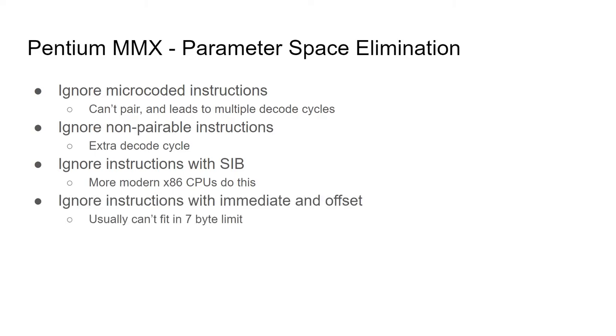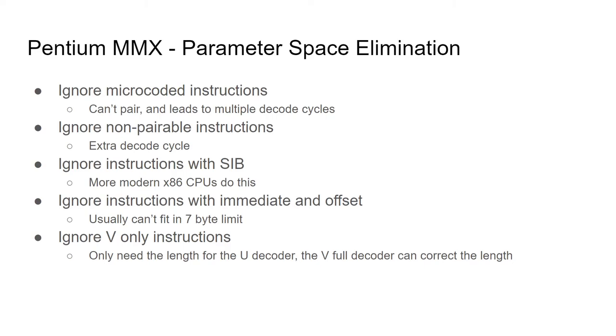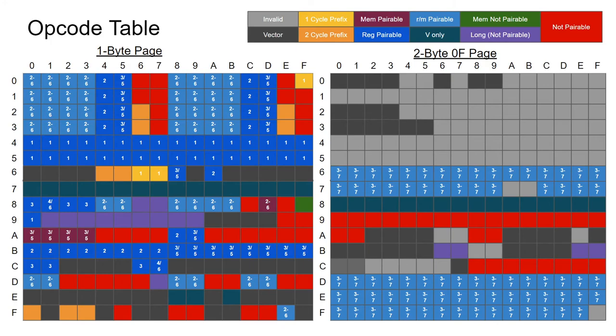Fourth, we can ignore any instructions with both an immediate and offset. This was a restriction imposed by the Pentium MMX back-end pipeline. Fifth, we can ignore instructions that can only issue in the V pipeline. This is because we only need a correct length in the U decoder to find the V instruction. The correct length of the V instruction can be figured out in the align cycle. In all of the ignored cases, the pipeline will have two or more cycles to decode the lengths of the instruction pair, meaning that an accurate pre-decoded length is not necessary.